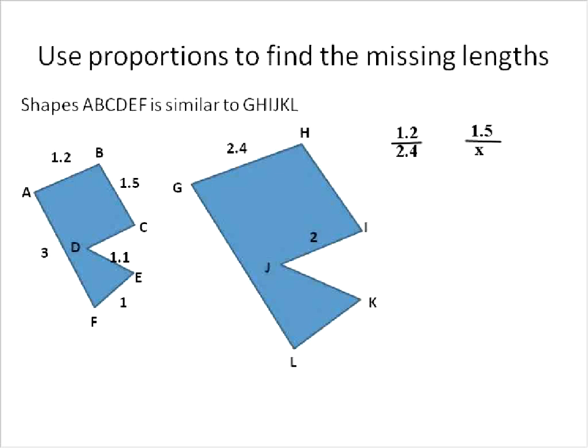So we know that these two fractions are equivalent fractions because we put the length of the smaller shape on the top, the length of the larger shape, the length of the smaller shape here on the top, and then the missing length there. Because they're proportional to each other, we can write them like this and then use cross multiplication to actually solve.